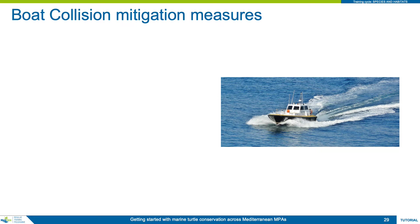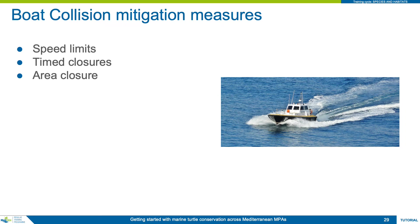Theoretically, it is simple to minimise or avoid turtle and boat collisions. The simplest measure is to limit the speed of boats in areas of high turtle density, though this may be difficult to enforce. Other measures include seasonal closures of areas to boating when turtles are known to be present, and specific area closures when turtles are known to congregate in particular hotspots. An additional measure is the use of propeller guards, which deflect turtles away from the potentially lethal cutting motions of propeller blades, limiting the interaction to more generic blunt impact collisions.